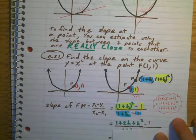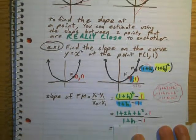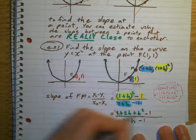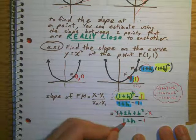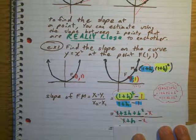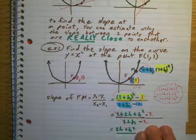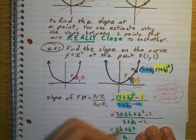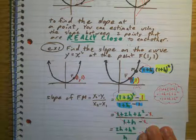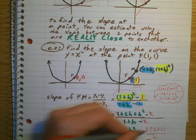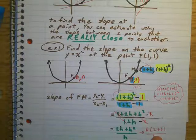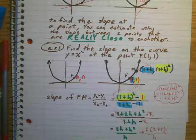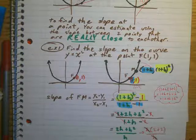Now that we've substituted (1 plus h) squared with this, I can see this 1 cancels out with this 1 — 1 minus 1. And same thing here, 2 minus 2, that's going to go away. So what am I left with? I'm left with 2h plus h squared over h. In the numerator, both of these have h, so I'm going to factor out an h. If I factor out an h, I end up with h times (2 plus h) over h. I've got h here and h here — cancel that out. And then I'm left with 2 plus h.